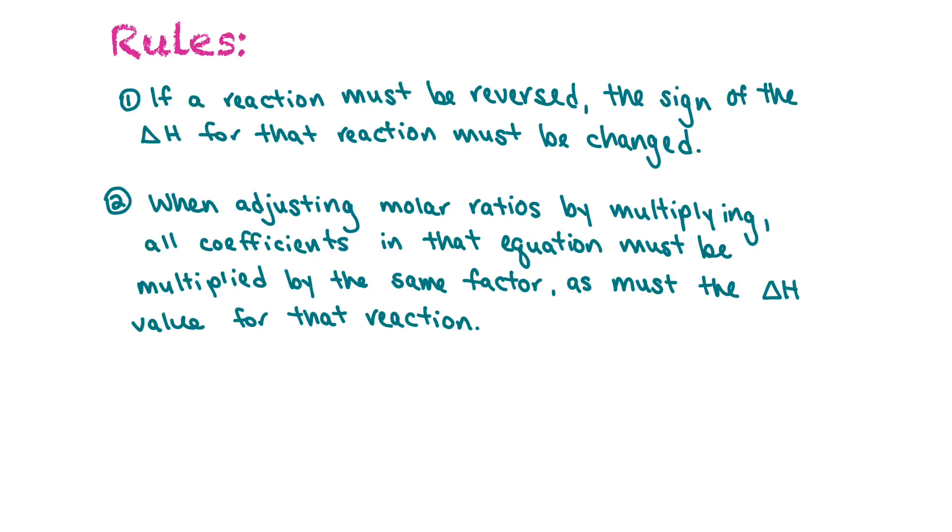So one rule to follow is that if a reaction must be reversed, the sign of the delta H for that reaction must be altered as well. When you're adjusting molar ratios by multiplying, all the coefficients in the equation must be multiplied by the same factor as must the delta H value for that reaction. So for instance, you need to double the amount of hydrogen. You have to double everything in the reaction plus double the delta H value.